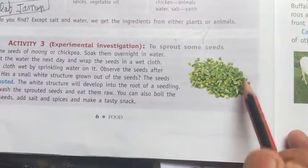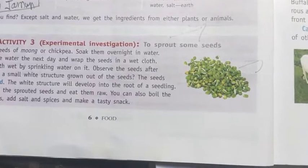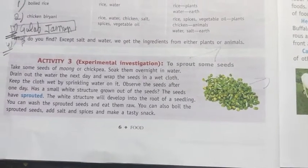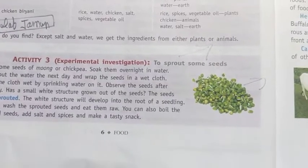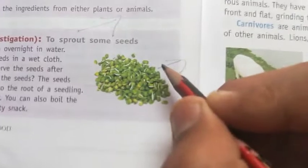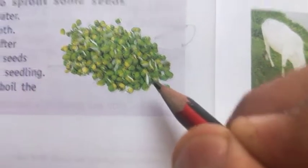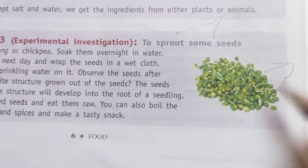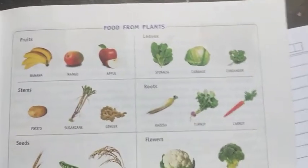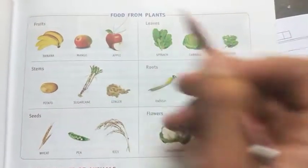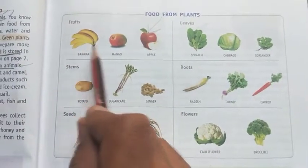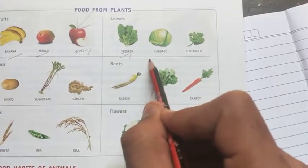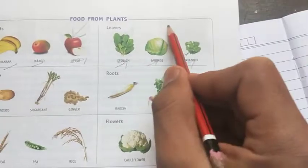There is experiment number three — to sprout some seeds. You can take moong dal, place it in water, then take it out of the water, place it in a cloth, tie the cloth, wet the cloth, and leave it for two or three days. You will see the seeds get sprouted, meaning seeds will start germinating and a small structure will start coming out. You can try this at home. Now we will also discuss one last diagram — we get food from plants like fruits, and there are many kinds of fruits you can include. We also get leaves from plants, like cabbage, coriander, and pudina.